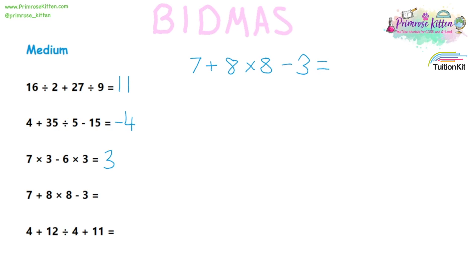In our next question, we have seven plus eight times eight minus three. Looking at BIDMAS, the multiplication — eight times eight — is the bit that needs to be done first. Eight times eight gives us 64. This will turn the sum into seven plus 64 minus three. This will give us an answer of 68.